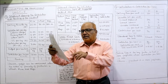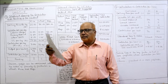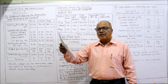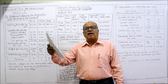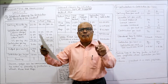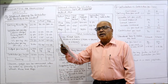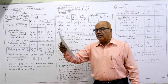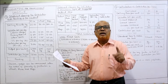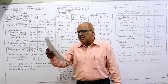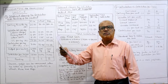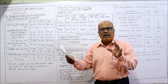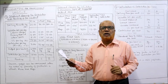Yield per hectare and selling price per kilogram for different crops are as follows. For rice: yield per hectare is 2,500 kg and selling price is ₹25 per kg. Wheat: 625 kg per hectare and selling price ₹50. Ragi: 125 kg per hectare and selling price ₹300 per kg. This is the data given — per hectare, how much is the output in kilograms.